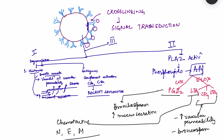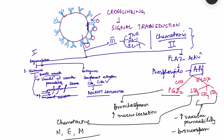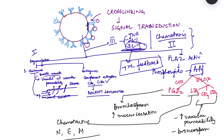Third, mast cells also release cytokines including TNF-alpha, IL-1, and IL-4, which lead to chemotaxis of various leukocytes. Importantly, IL-4 released here creates a positive feedback: it promotes TH2 differentiation, which drives B cells to produce more IgE antibodies. So once the reaction starts, it enters a positive feedback loop and the response continues.